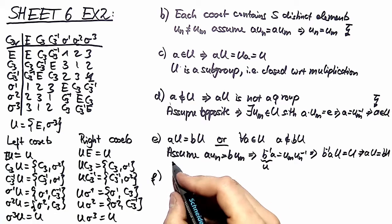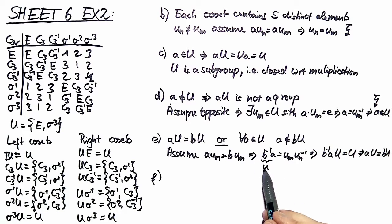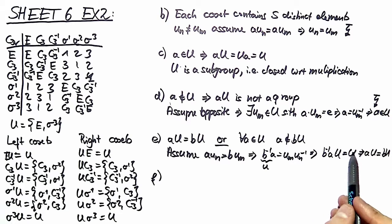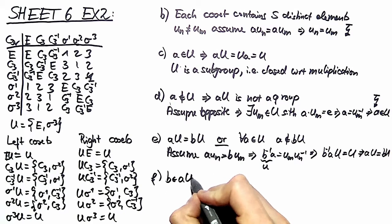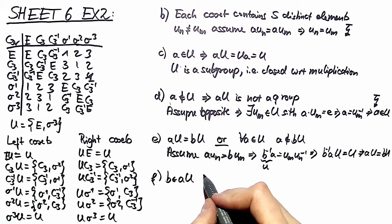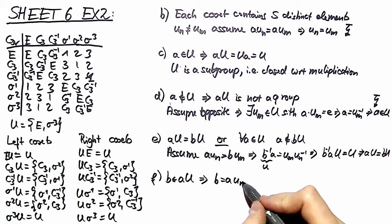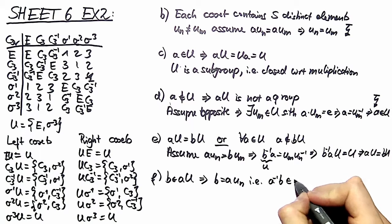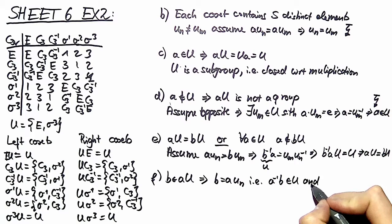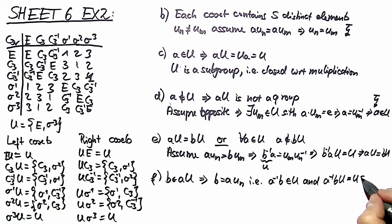The proof of part F goes just the same way — the same idea, namely to observe that we have a composite element which is in U and deduce again the coset property derived in part C. We assume that b is in our coset aU, meaning we can write b as a times an element u in our group. That means a⁻¹ times b is in U, and again we derive a⁻¹bU equals U, and therefore bU equals aU.